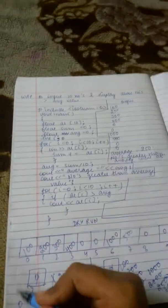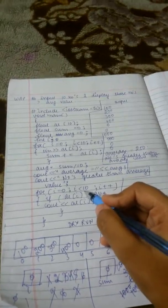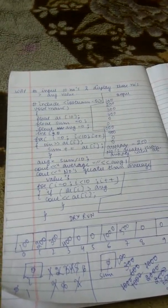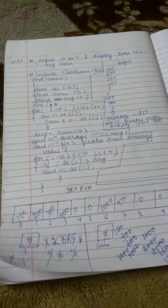Now it will get incremented to 1. 1 is less than 10? Yes. ar[1] is greater than 250? No. The number will not get displayed.